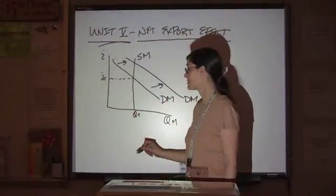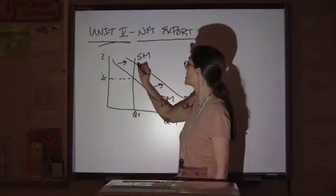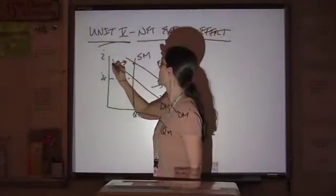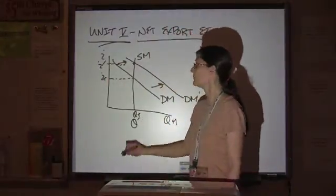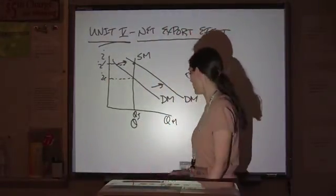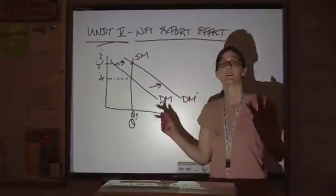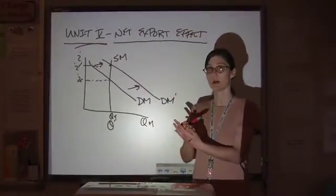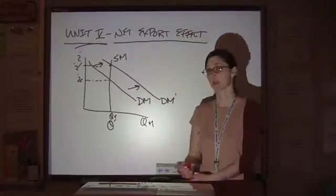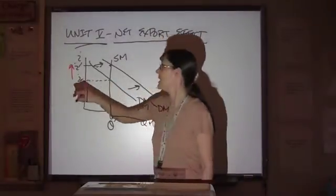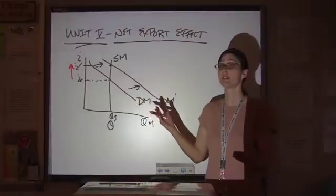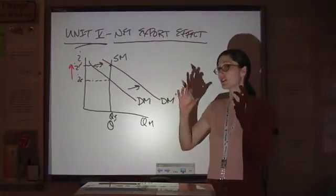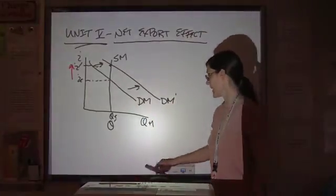When that happens, you have a new equilibrium interest rate. Your quantity is the same because you didn't move the supply. Government borrowing money, running a deficit, jacks up the interest rate.